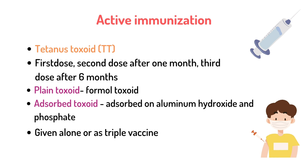For active immunization, tetanus toxoid (TT injection) is given. The schedule is at day 0, then one month later, then 6 months after the first dose. It can be in two forms: plain (formal) toxoid or adsorbed toxoid, adsorbed on aluminium hydroxide and phosphate. It can be given as a single TT injection or combined with other vaccines like the triple vaccine DPT — diphtheria, pertussis, and tetanus.